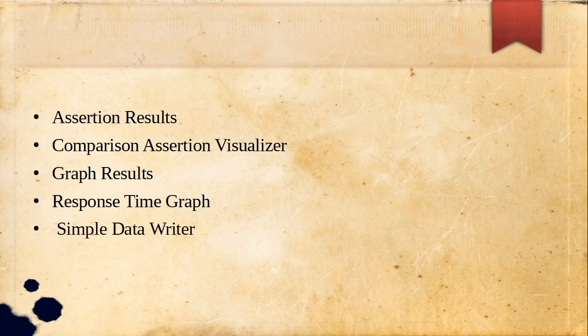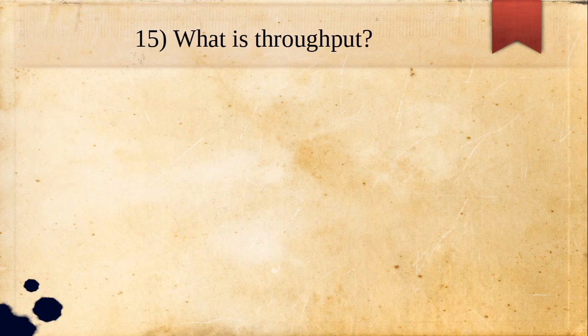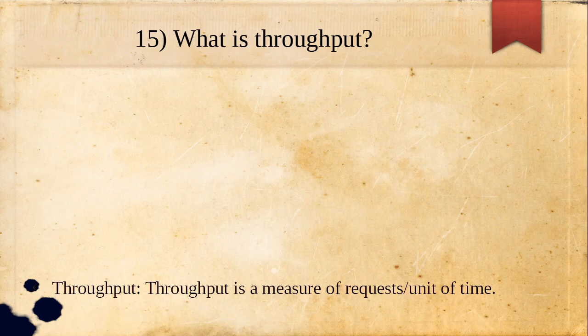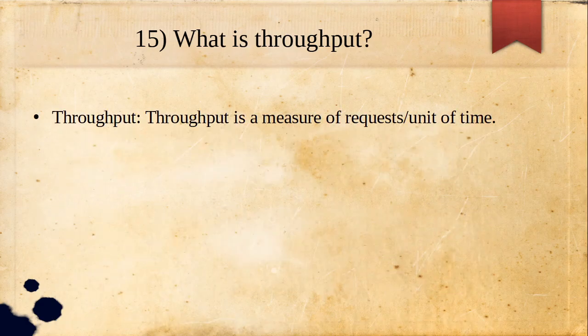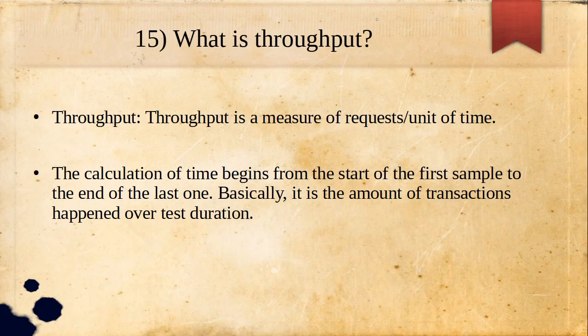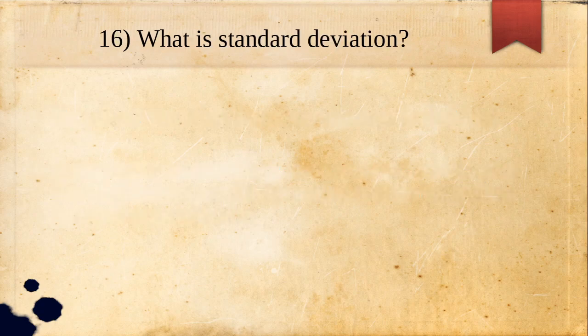Additional listeners include: Simple Data Writer and Generate Summary Results. Next question: what is throughput? Throughput is a measure of requests per unit of time. The calculation time begins from the start of the first sample to the end of the last one. Essentially, it is the amount of transactions that happened over the test duration.